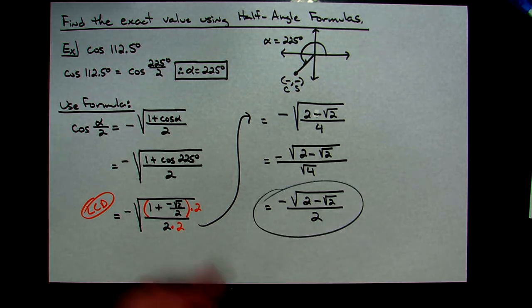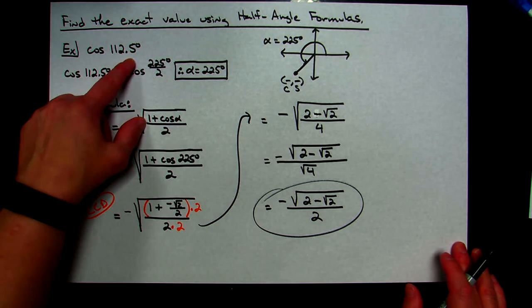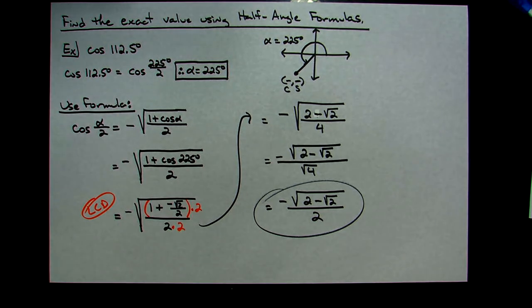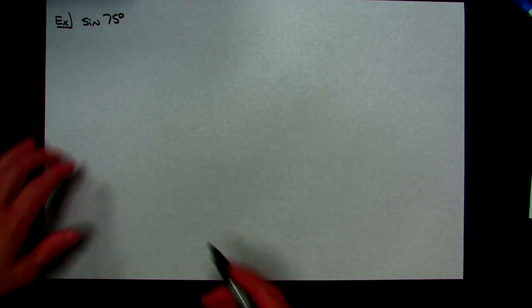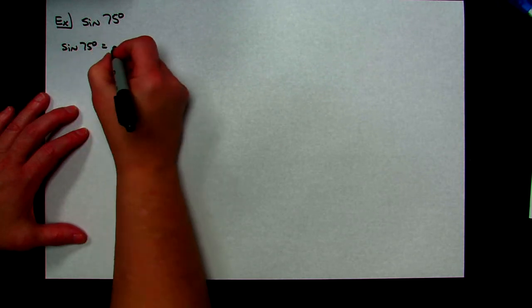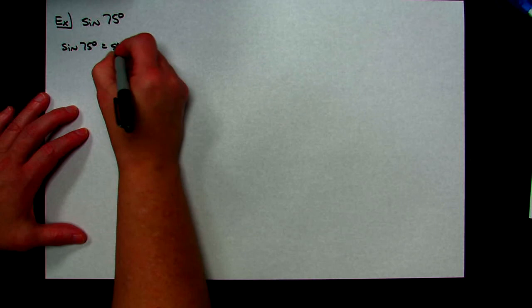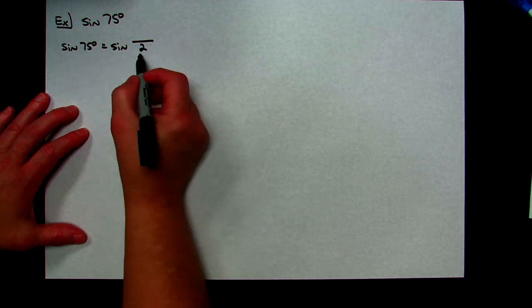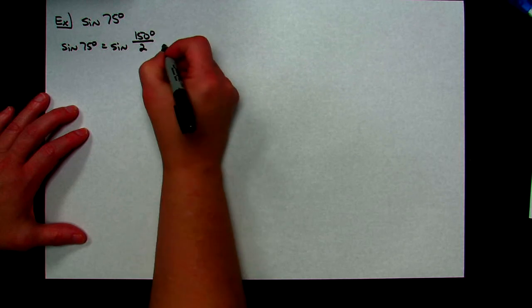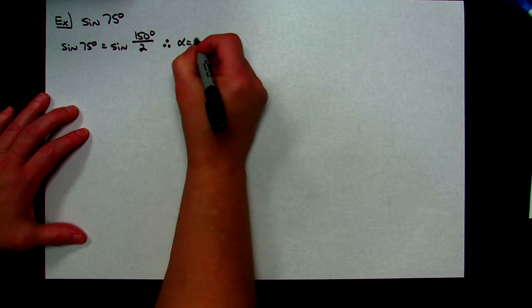That is the exact value for cosine of 112.5° without using a calculator. Now let's look at a sine example. Suppose we need to find sine of 75°. Starting the process again: I need to determine alpha. Rewriting sine(75°) as sine of some number divided by 2 — taking 75 × 2 gives 150, so alpha = 150 degrees.